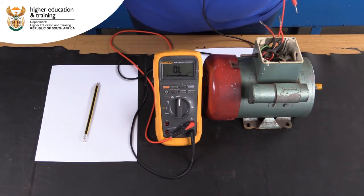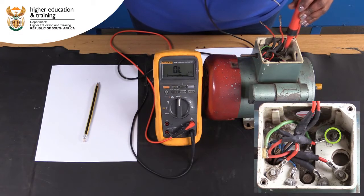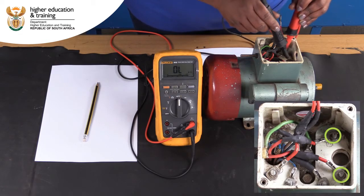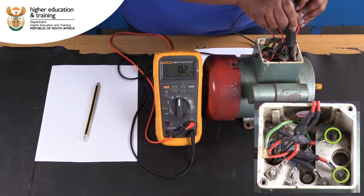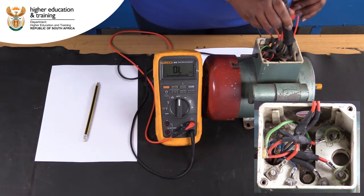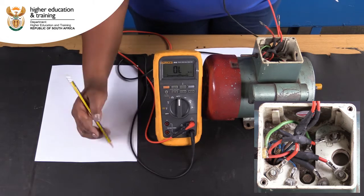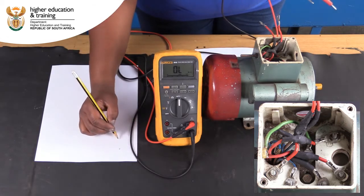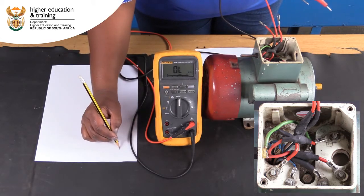Now we start to measure the resistance between the different posts. Between posts 1 and 2, we get a reading of 0.2 ohms. This near-zero reading indicates the centrifugal switch. Make a note of this result on your own terminal block diagram.